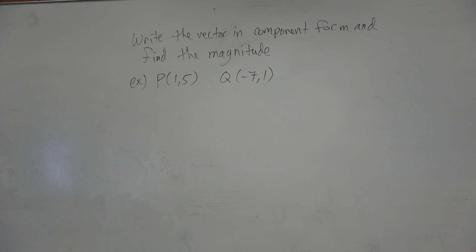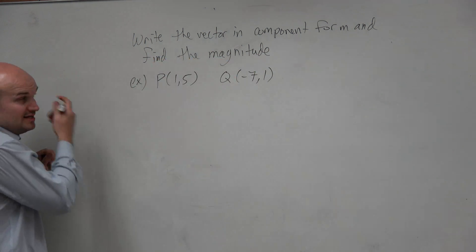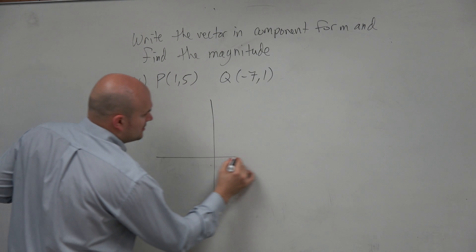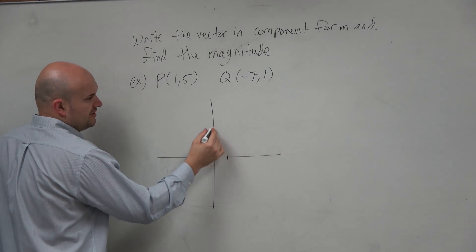The first thing to make sense of this, if you're struggling at least to conceptualize it, plot the points. So P is at (1,5). 1, 2, 3, 4, 5.